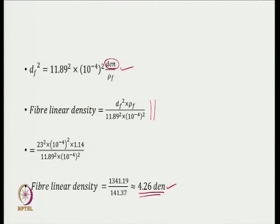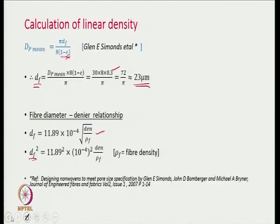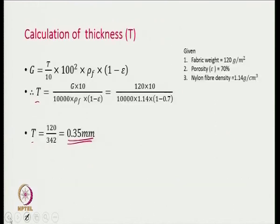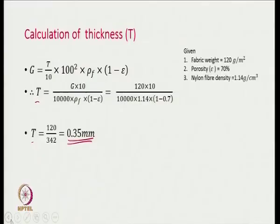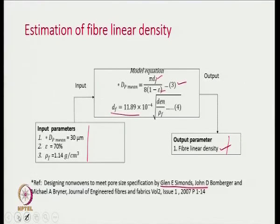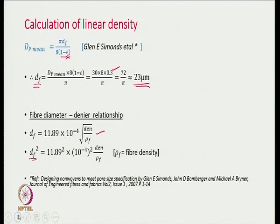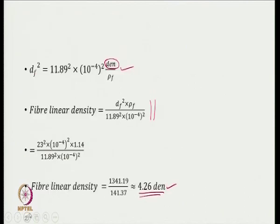If we choose this denier of fiber and make the thickness determined earlier — which was 0.35 mm — it goes to the production team. They have to arrange and set the parameters of different machines in such a way that they can create non-woven structures from 4.2 denier fibers, or close to 4 denier fibers, and the thickness has to be around 0.35 mm.